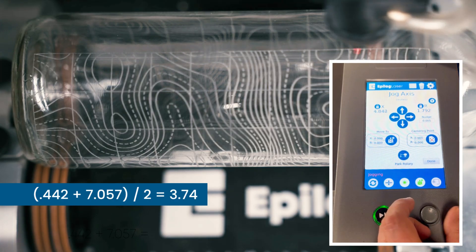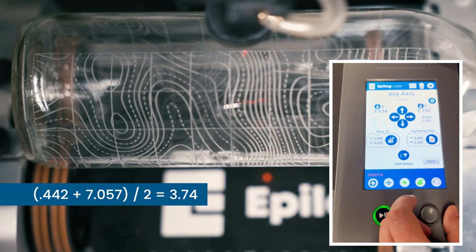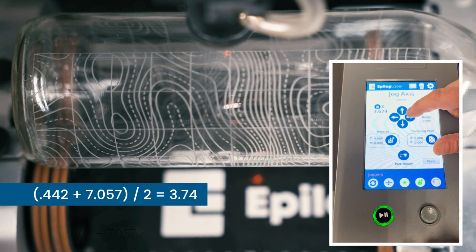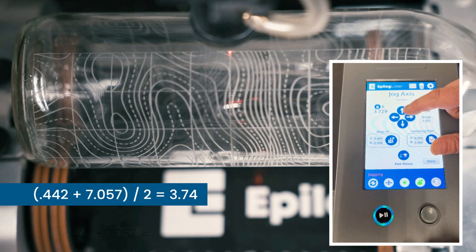So I'll just scroll this over right around 3.74. I can use the arrow to nudge this over just a little bit. Right there. That looks good. I'll hit X just to lock that in place.